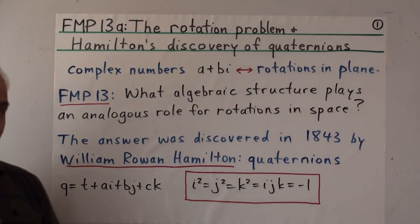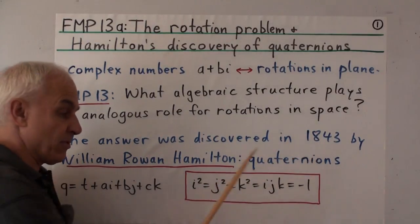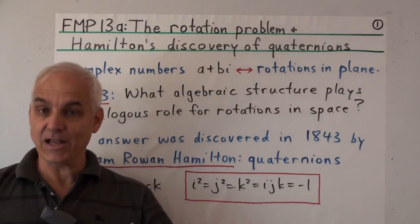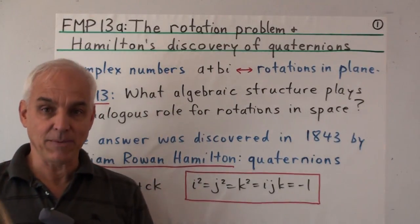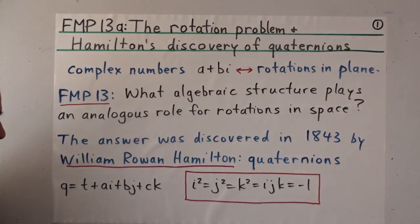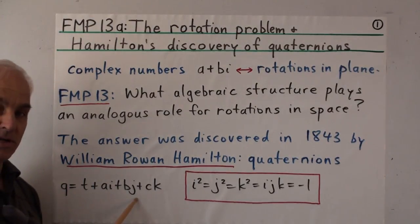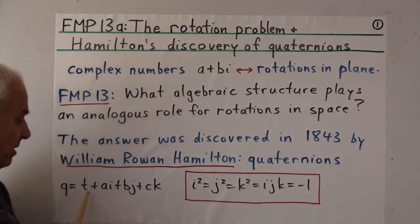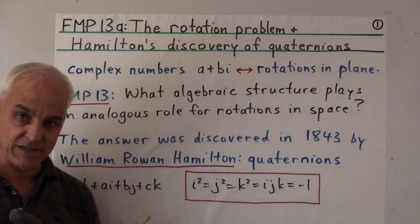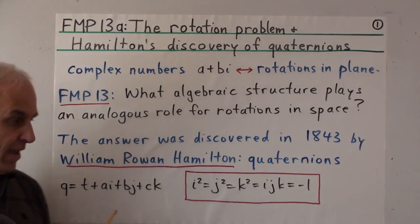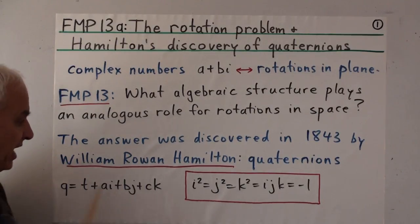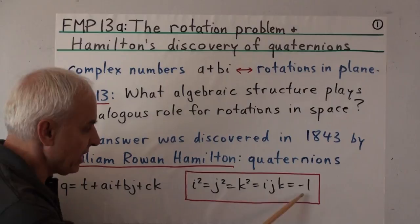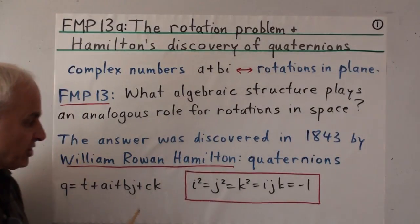On a fateful day in 1843, he was walking with his wife along a canal in Dublin and was crossing a bridge when inspiration came to him. He realized that the solution was to consider not a three-dimensional space of vectors, but rather a four-dimensional space of vectors, and that the crucial properties were satisfied by new numbers i, j, and k captured by certain equations.